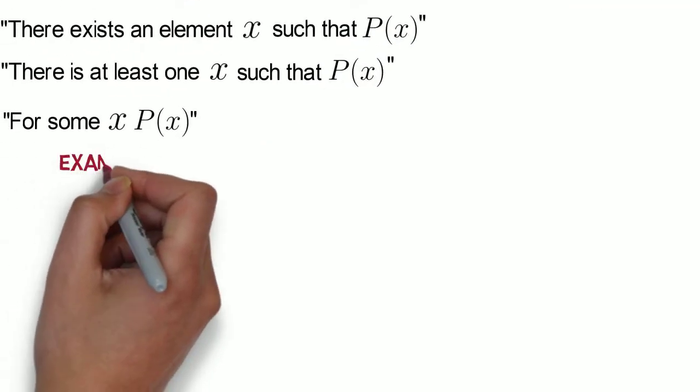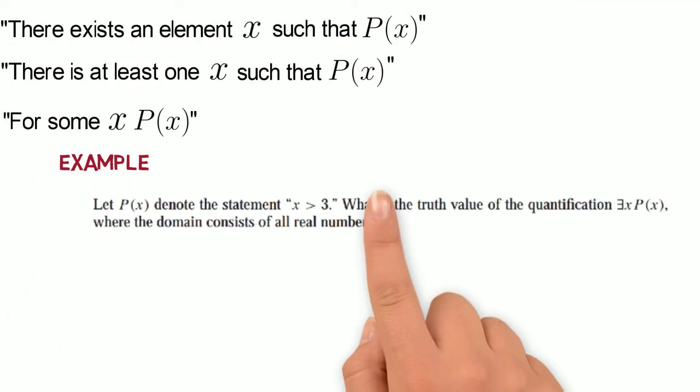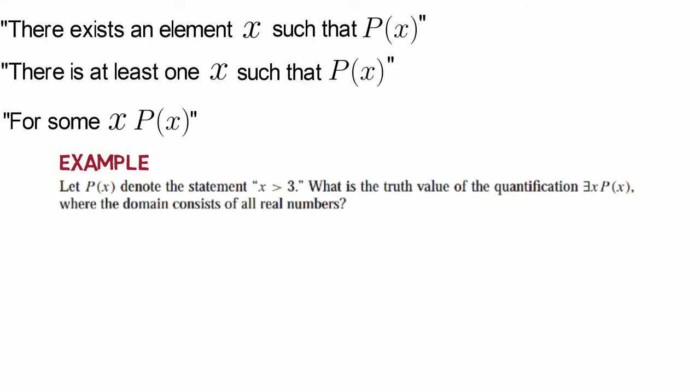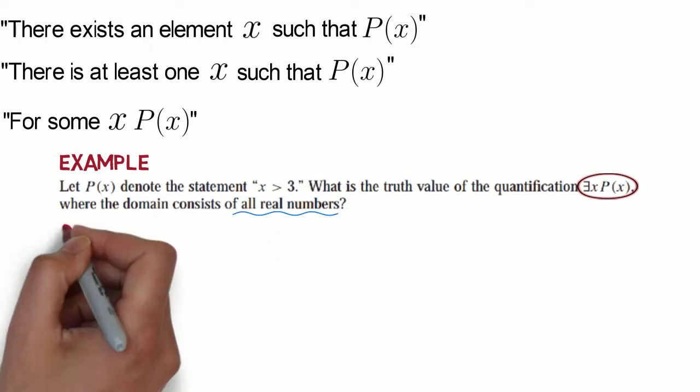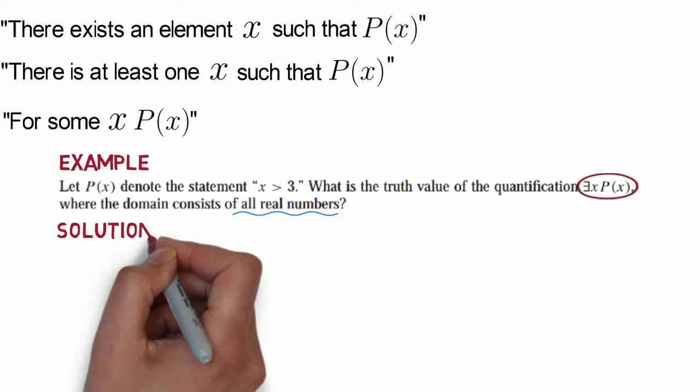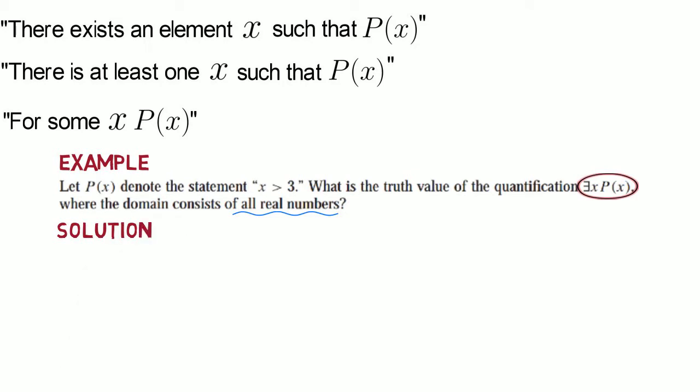Let us take this example. Let P(x) denote the statement x > 3. What is the truth value of the quantification ∃x P(x), where the domain consists of all real numbers? The solution is obvious and straightforward. Let's write it down.